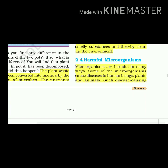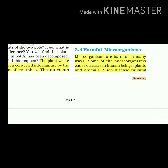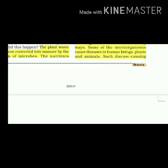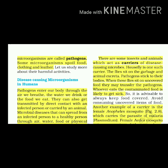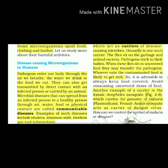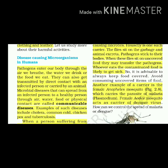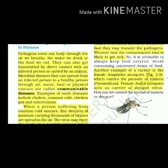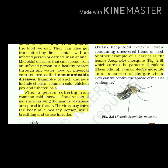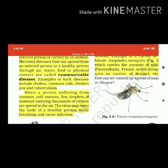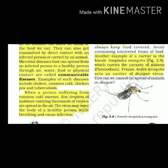Microorganisms are harmful in many ways. Some microorganisms cause diseases in human beings, plants and animals. Such disease-causing microorganisms are called pathogens. Some microorganisms spoil food, cloth and leather. Pathogens enter our body through the air we breathe, the water we drink and the food we eat. They can also be transmitted by direct contact with an infected person or carried by an animal. Microbial diseases that can spread from an infected person to a healthy person through air, water, food or physical contact are called communicable diseases. Examples include cholera, common cold, chickenpox and tuberculosis.